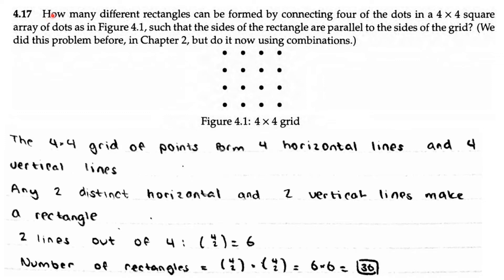AoPS Counting and Probability 4.17. How many different rectangles can be formed by connecting four of the dots in a 4x4 square array of dots, as in figure 4.1, such that sides of the rectangle are parallel to the sides of the grid?